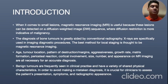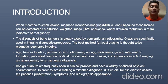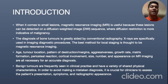When it comes to small lesions, MRI is useful because these lesions can be detected on diffusion-weighted imaging (DWI), where diffusion restriction is more indicative of malignancy. The diagnosis of bone tumors is greatly aided by conventional radiography. X-rays are specifically used in imaging diagnostic procedures, and MRI is thought to be the best method for local staging. Age, tumor location, pattern of destruction or margins, aggressiveness, growth rate, matrix formation, periosteal reaction, cortical involvement, size, number, and appearance on MR imaging are necessary for an accurate diagnosis. Benign tumors are frequently seen in clinical practice, and it is crucial for clinicians to assess the patient's presentation, symptoms, and radiographic appearance.